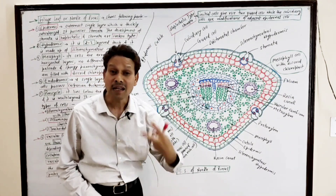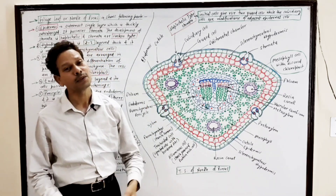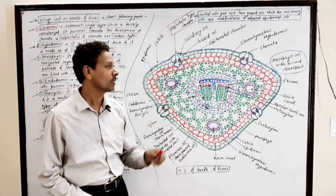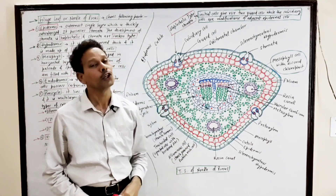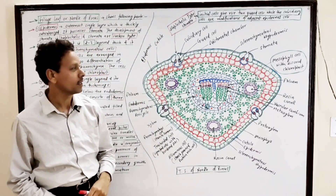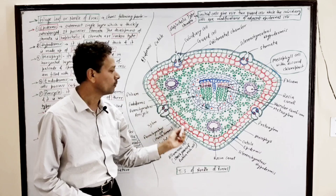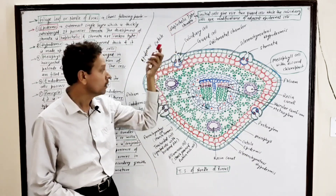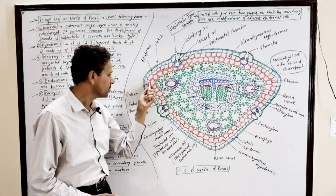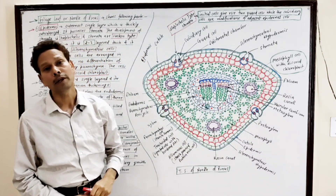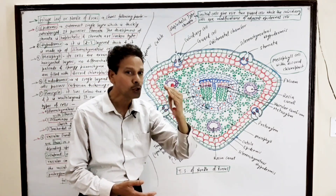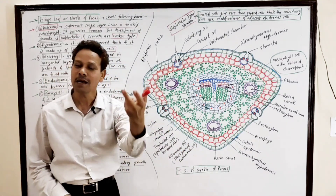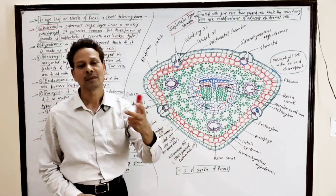These stomata are sunken type, which prevents excessive loss of water because the plant is xerophytic. This epidermis is well covered by a thick cuticle, which again checks water loss. Just below the epidermis, the second part of this needle is the hypodermis. This epidermis is the outermost layer, and the second part — hypodermis — is two to three layers thick, which provides mechanical support to the leaf.